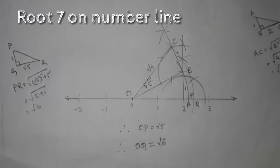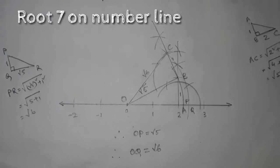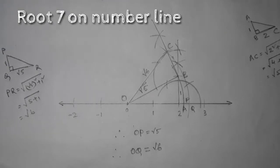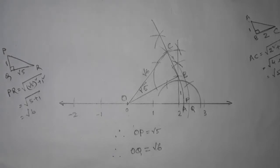So first of all, you need to draw root 5 and root 6. If you don't know how to draw root 5 and root 6 on the number line, then watch my video which I have on my channel. Then you can represent root 7 on the number line.